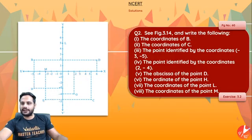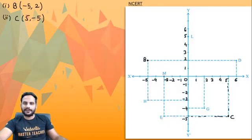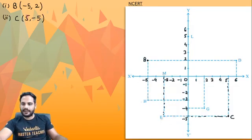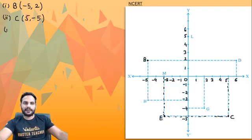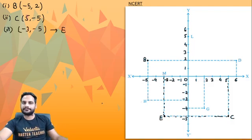Third one: the point identified by the coordinates (−3, −5). So x-coordinate is minus 3 and y-coordinate is minus 5. From x-coordinate minus 3, draw a perpendicular; from y-coordinate minus 5, draw another perpendicular. The intersection is point E. So the point representing (−3, −5) is point E.